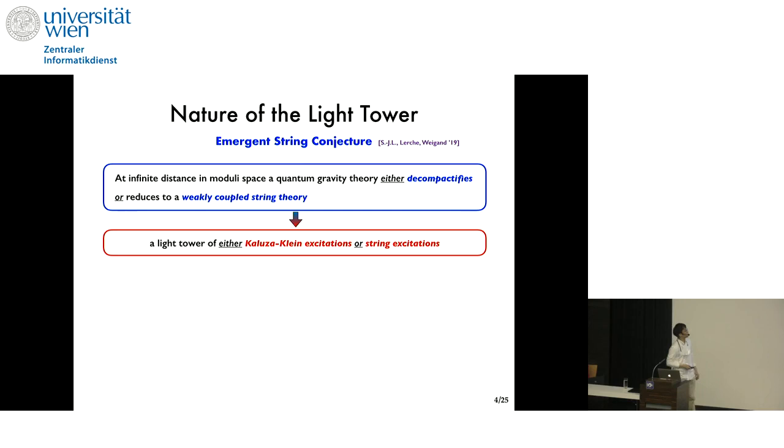This has been indeed confirmed in various string setups, but still remains a conjecture. And to develop intuitions, it will be very helpful to reveal the nature or the origin of this light tower. And along this line, the emergent string conjecture was proposed, according to which, at infinite distance, the theory either decompactifies or reduces to a weakly coupled critical string theory. This is a refinement of the previous conjecture in that the former case leads to a light tower of Kaluza-Klein excitations and the latter to a light tower of string excitations.